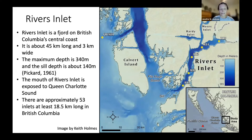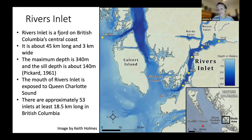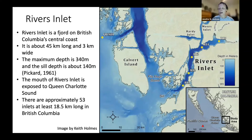What's interesting about Rivers Inlet is that the mouth is exposed to Queen Charlotte Sound, which is a very dynamic area with a lot of influences from the open ocean. Rivers Inlet isn't unique — it's one of about 53 inlets on the British Columbia coast, based on estimates by Pickard, who defined them as inlets that are at least 18.5 kilometers long. So things we learn about Rivers Inlet can be applied to other BC inlets.